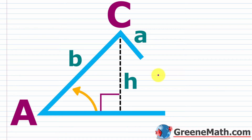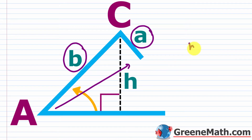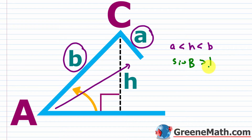The first scenario is where there's no triangle and you're given an acute angle. We're given angle A and its opposite side, lowercase a, plus side b. To show there's no triangle, you can check whether H is greater than a and less than b. You can also try setting up the law of sines and show that the sine of angle B comes out greater than one.